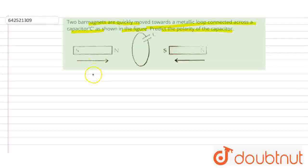Now, according to Lenz's law, the current induced in the coil will oppose the approach of the magnets.